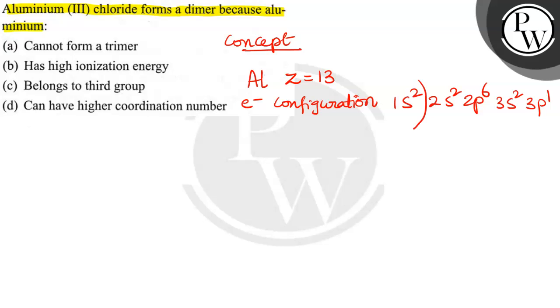This is first shell completely filled, second shell also completely filled, but this is called outermost shell. Outermost shell electrons are also called valence electrons. How many valence electrons are there? Three. So it belongs to group 13 elements. Aluminium belongs to group 13. So in option C, given 'belongs to third group'—it does not belong to third group, it belongs to group 13.